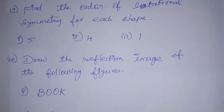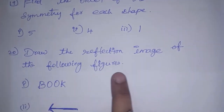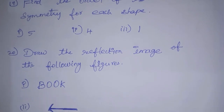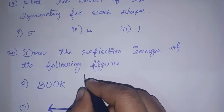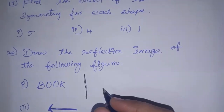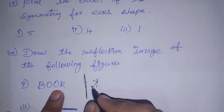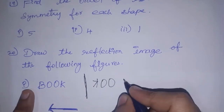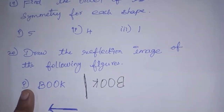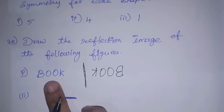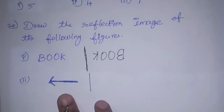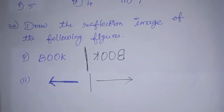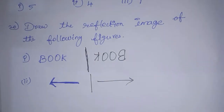Next is the 20th sum: draw the reflection image of the following figures. Reflection image — draw here or here. This is the mirror image. Here is the opposite side, so draw the opposite. You can change the two figures accordingly.